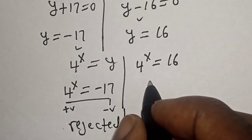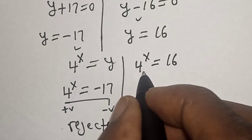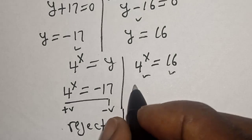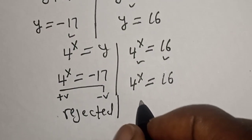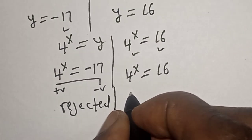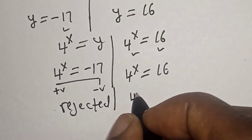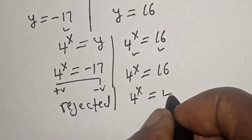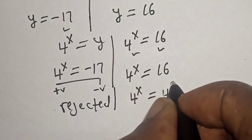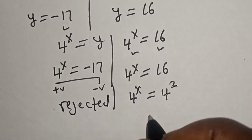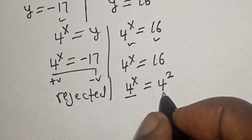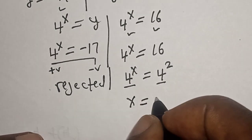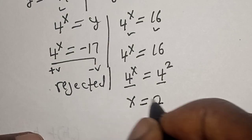Therefore, the real solution we have is 4 raised to power s is equal to 16. Then 4 raised to power s is equal to 4 squared. Since the bases are the same, s is equal to 2.